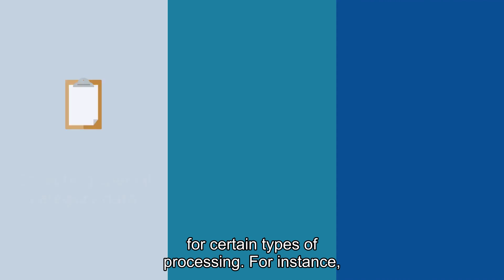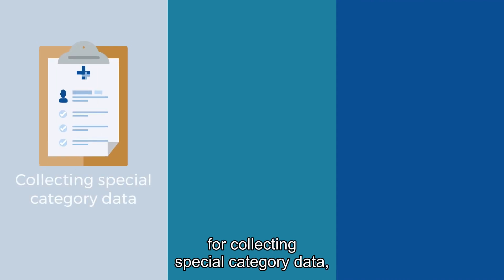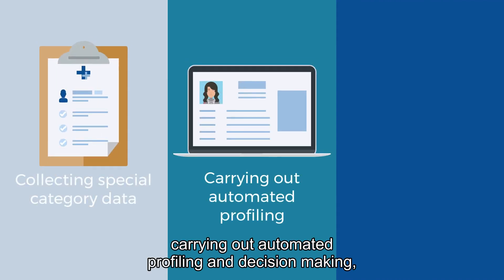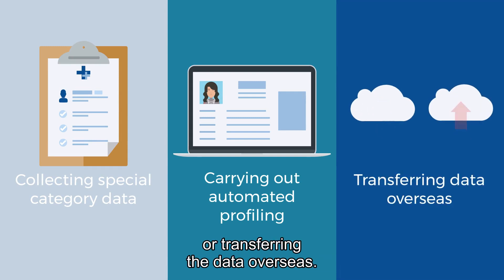Explicit consent can be mandatory for certain types of processing — for instance, for collecting special category data, carrying out automated profiling and decision making, or transferring the data overseas.